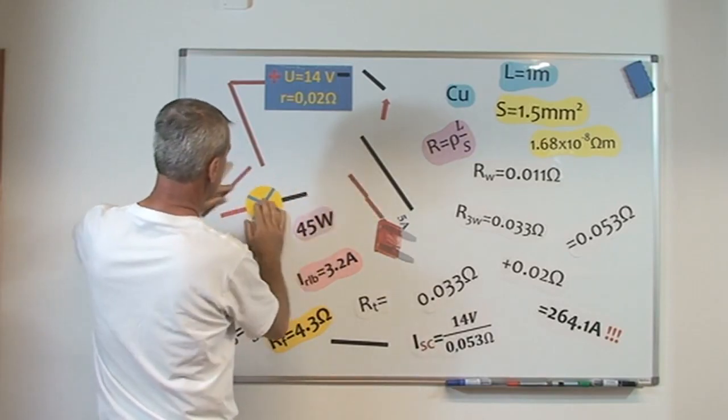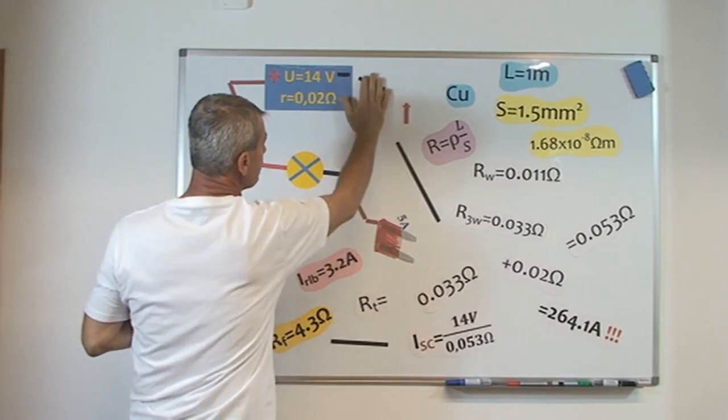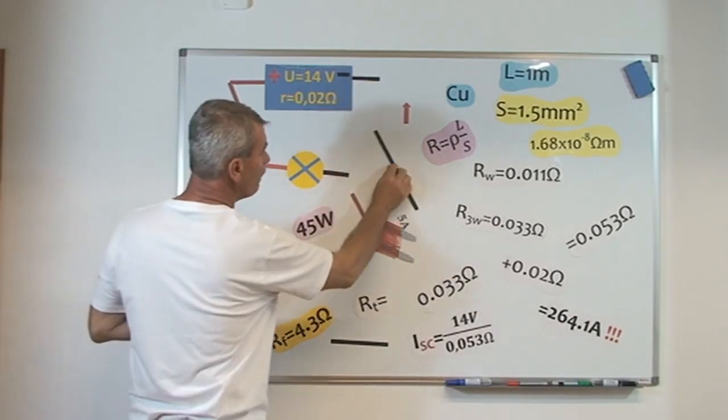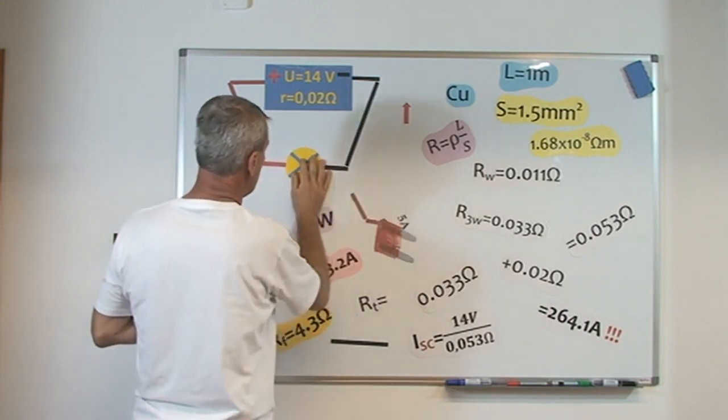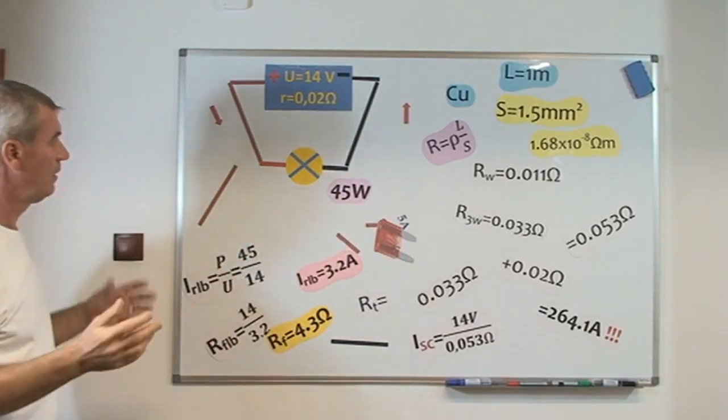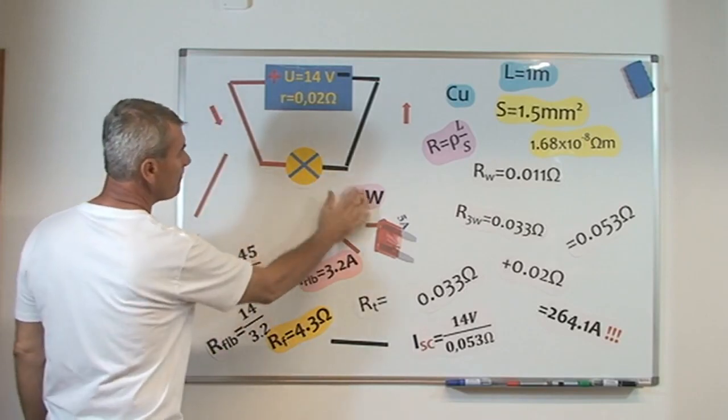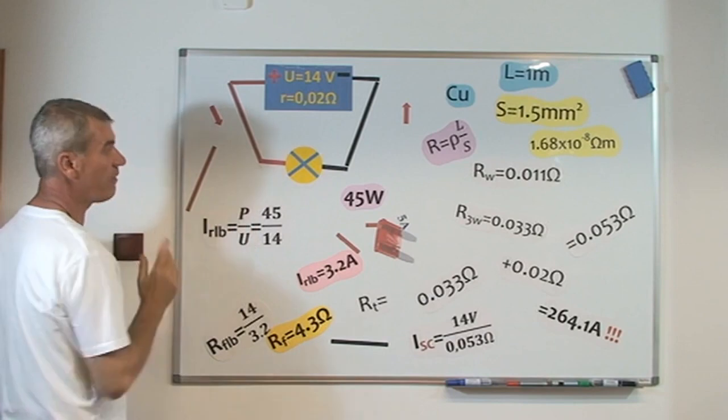I'm fixing two wires, and the electrical device is a light bulb with power of 45 watts.